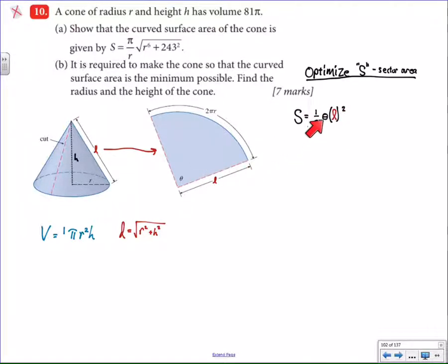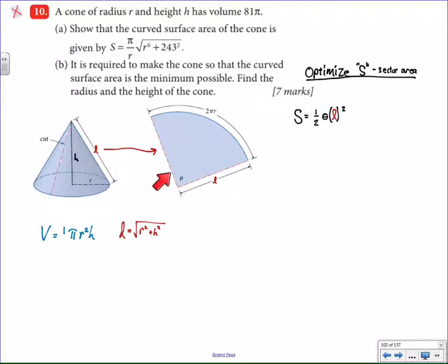So it's (1/2)θl² — I said pi, I meant theta — l squared. That's the thing we need to optimize. The reason this is challenging is because we need to get everything in terms of r, the radius of the base of the cone. That includes theta, this angle right here, which is apparently dictated by what we choose the radius of the cone to be. So too is the height and everything else.